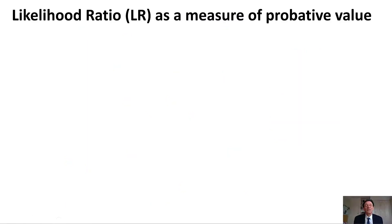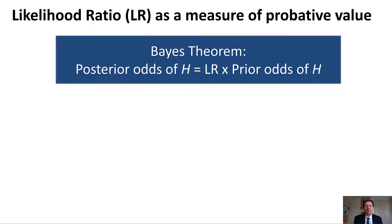In order to use the likelihood ratio as a measure of probative value, we actually have to use Bayes' theorem. What Bayes' theorem tells us — in the so-called odds version — is that the posterior odds of H are just the prior odds of H times the likelihood ratio. The interesting thing here is this is expressed as odds rather than probability. The odds is simply the probability of H against the probability of not H, the negation of H. That's very important because Bayes' theorem relies on considering H against its negation.